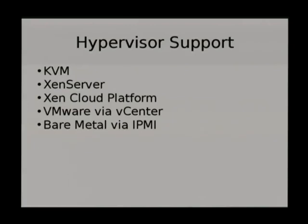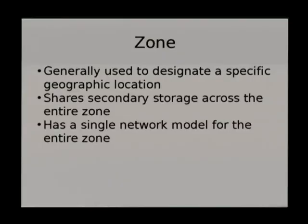Hypervisor support includes KVM, XenServer, cloud platform VMware via vCenter, and bare metal if you have IPMI. You can mix and match — you don't have to use all of one or the other. For example, a public cloud provider called Contegix in St. Louis offers VMware, KVM, or Xen depending on how much you want to pay. Zones are very similar to AWS regions — it's usually a geographic location, shares secondary storage across the entire zone, and has a single network model.